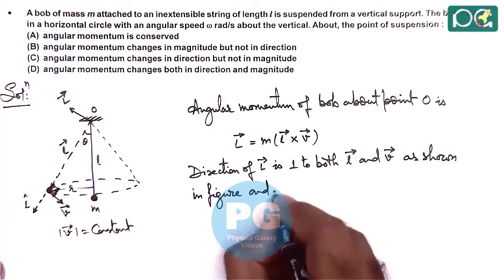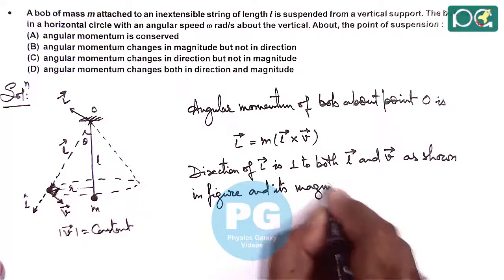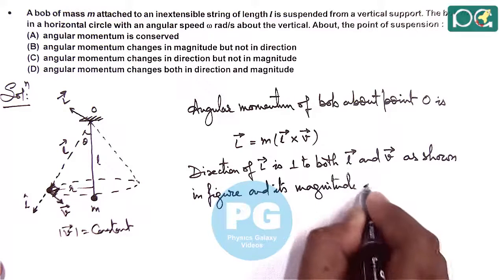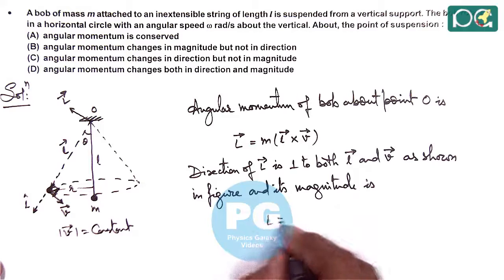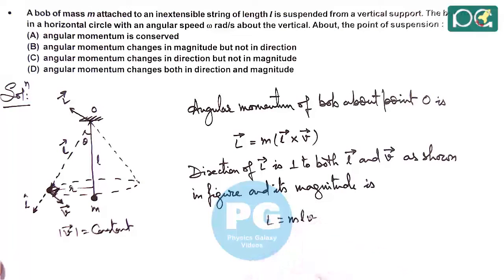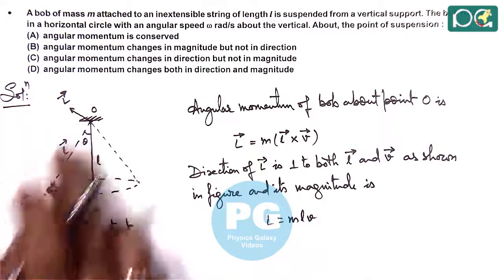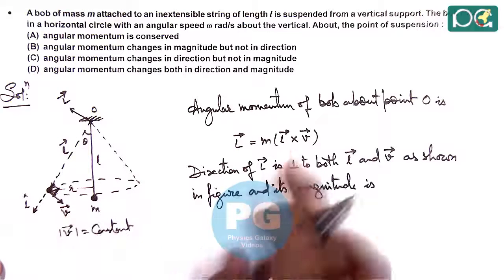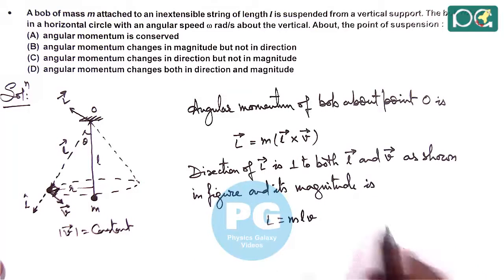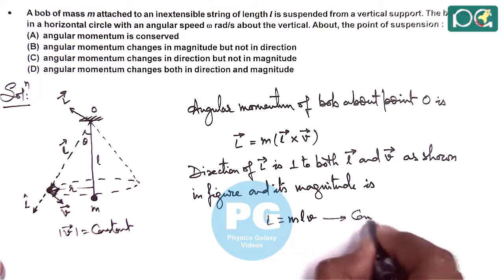And its magnitude, this can be directly given as MLV, because the angle between L vector and V vector is 90 degrees. So it is MLV sin 90. So magnitude we can see this is a constant.